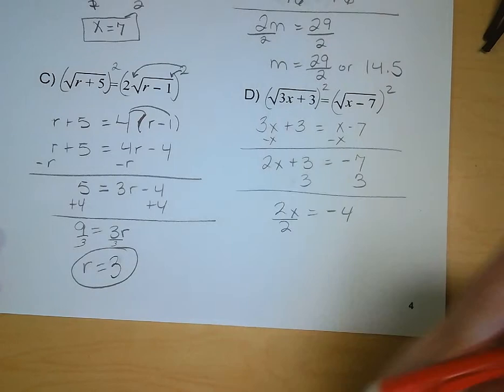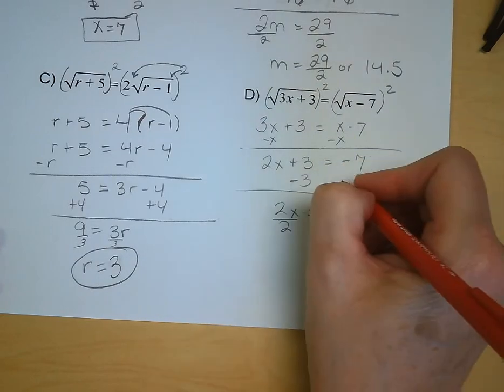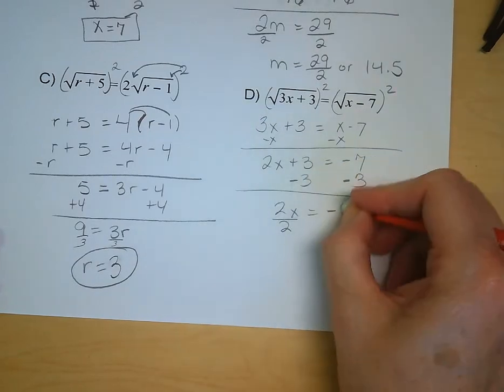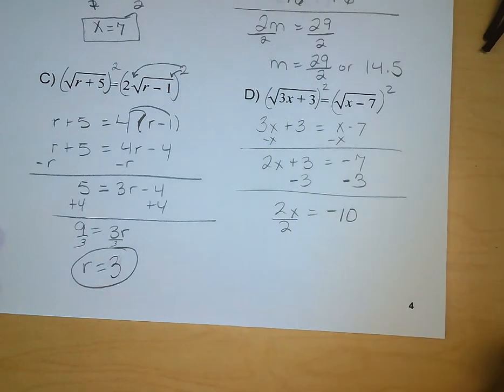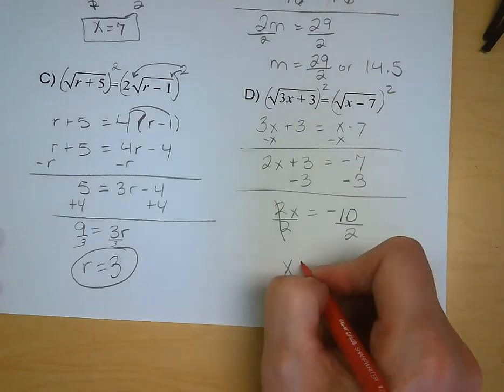Just kind of high maintenance today. That's all right. So 2x equals negative 10. Divide both sides by 2. And x is equal to negative 5.